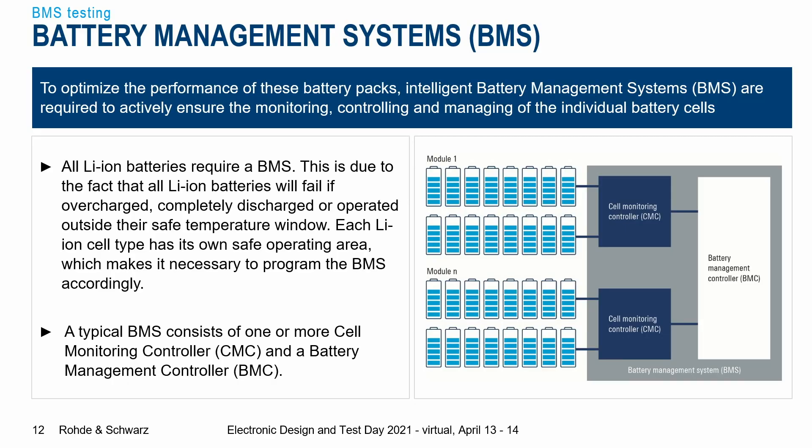You can think of a battery management system as making a battery smart. Whenever your cell phone tells you that you're running out of battery, or tells you how far you can go with your Tesla, this is always communicated by the BMS and not the cell itself — because the cell itself is pretty dumb. All lithium-ion batteries require a BMS, because if you overcharge or completely discharge a lithium-ion battery it will fail. It has a very specific operating and temperature window, and the BMS must be programmed accordingly.